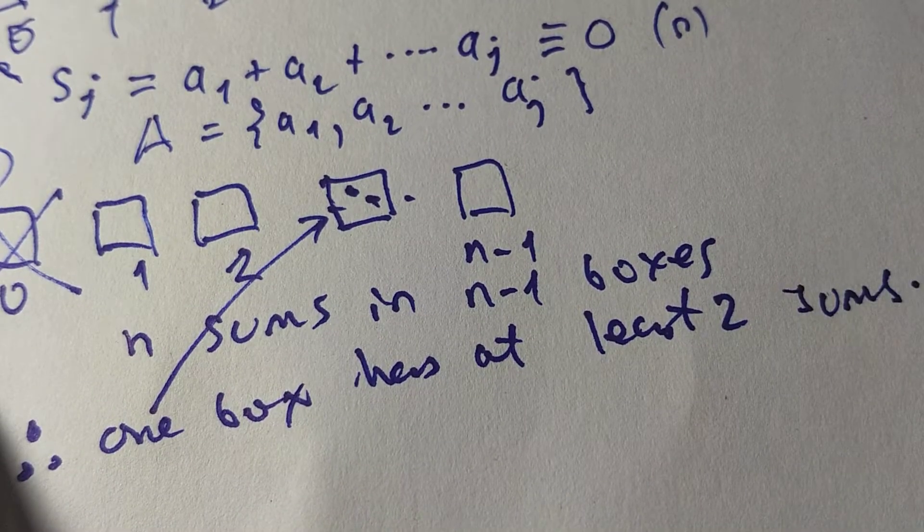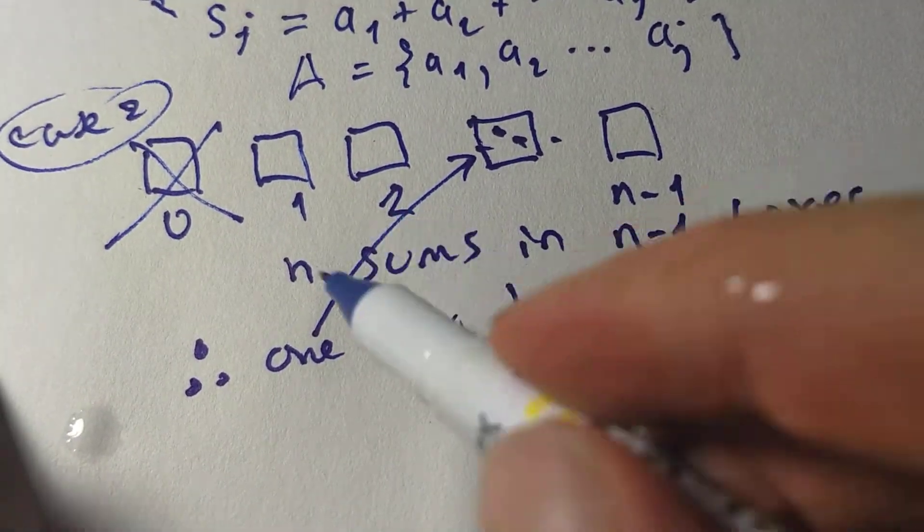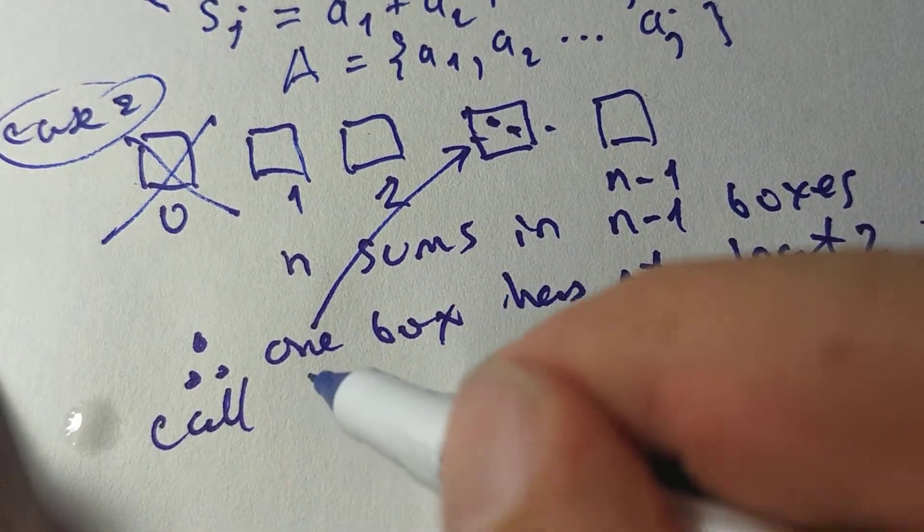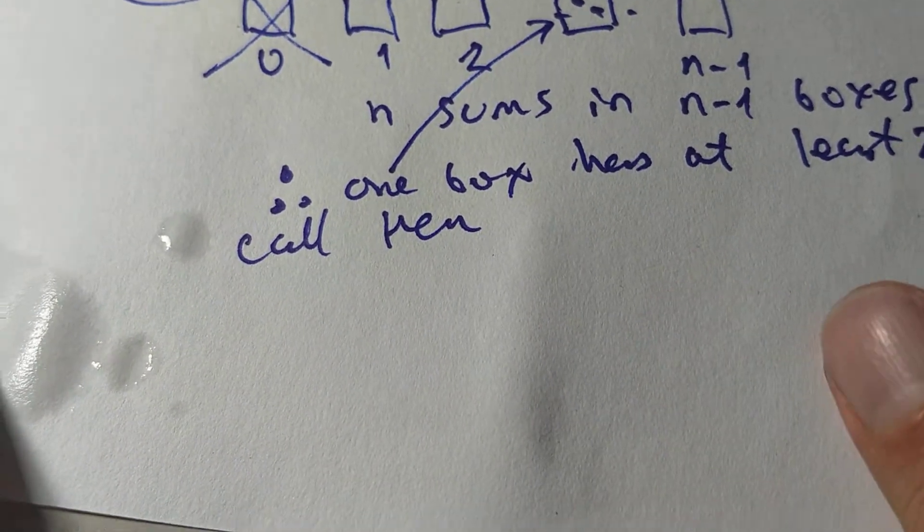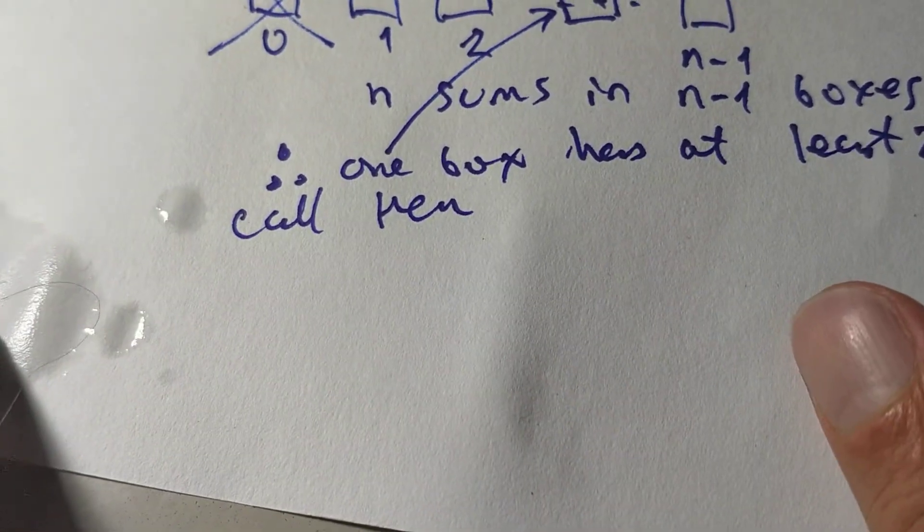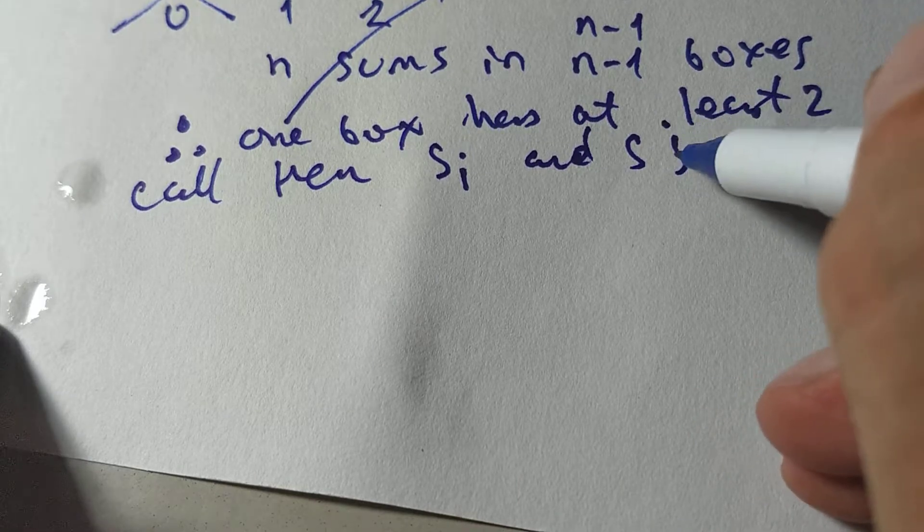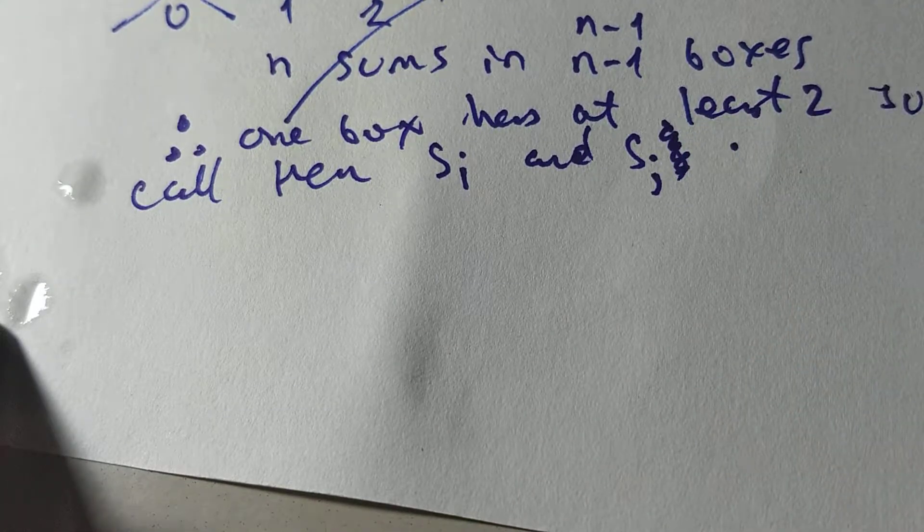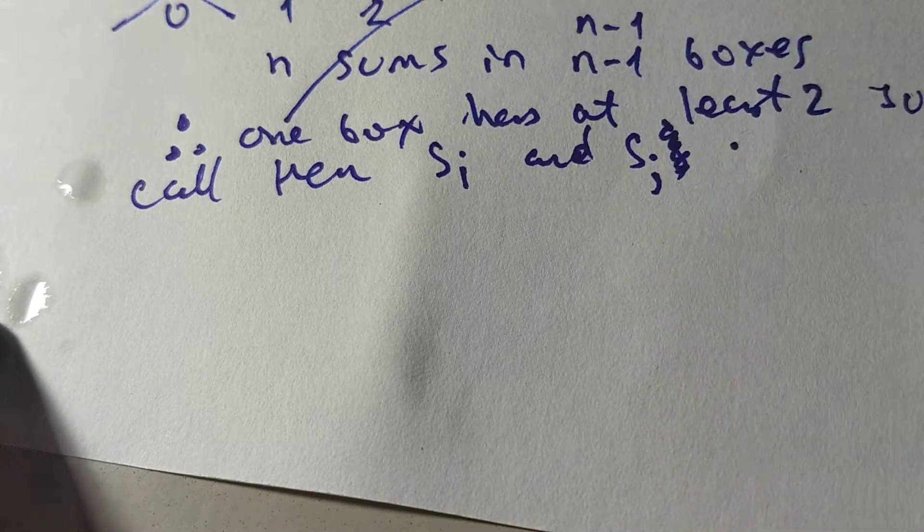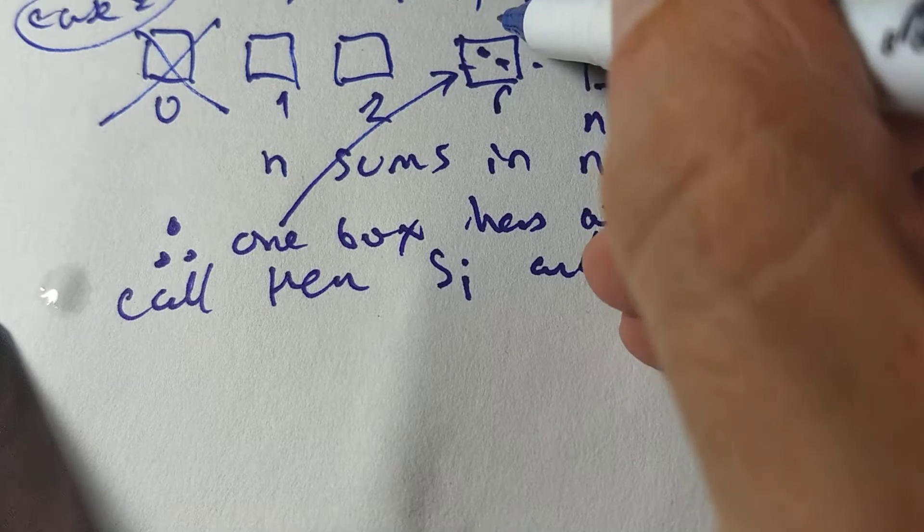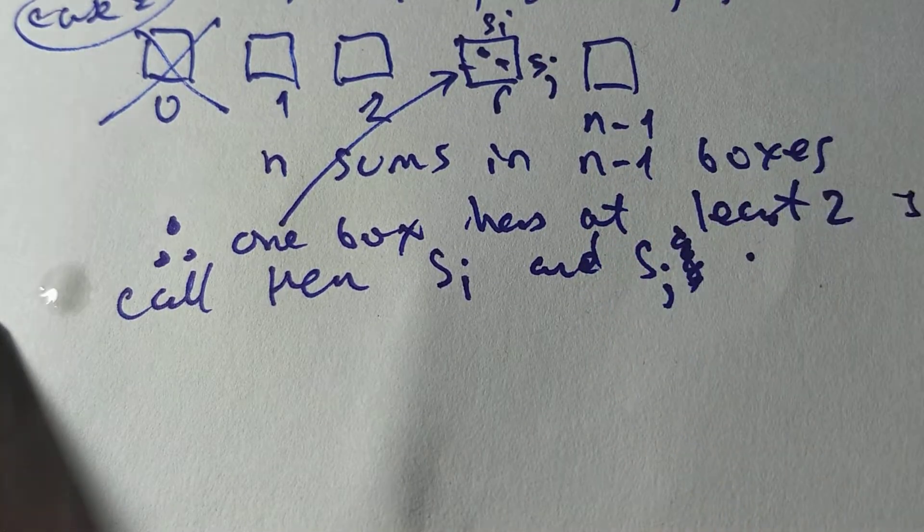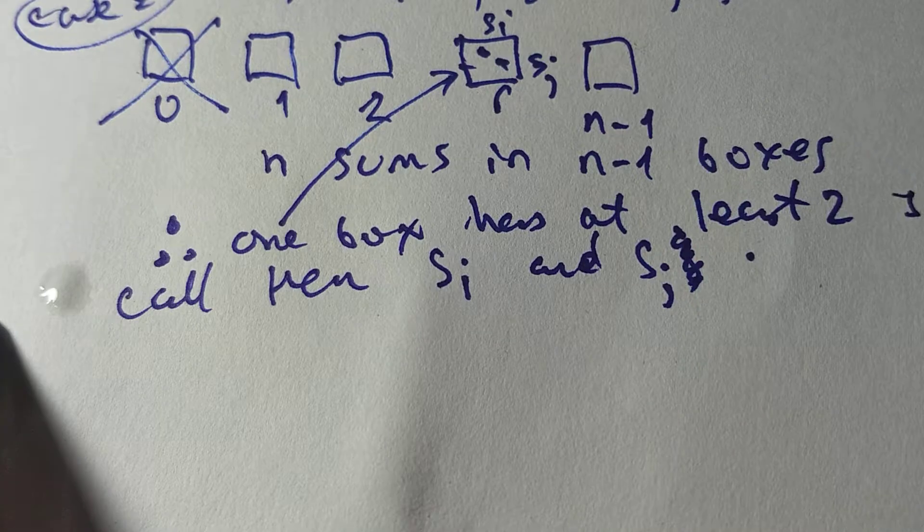Okay, which sums? Let's call them S, J. Let's try to make it look better. Let's call them SI and SJ. Okay. So, both of these have the same remainder. Here, I'll show you. This is remainder R. This is SI, this is SJ. It's in there. Both have remainder R.